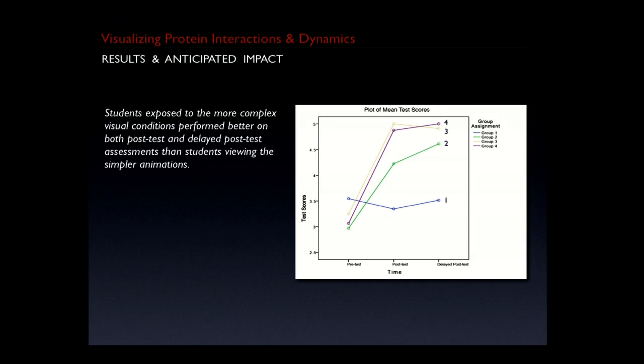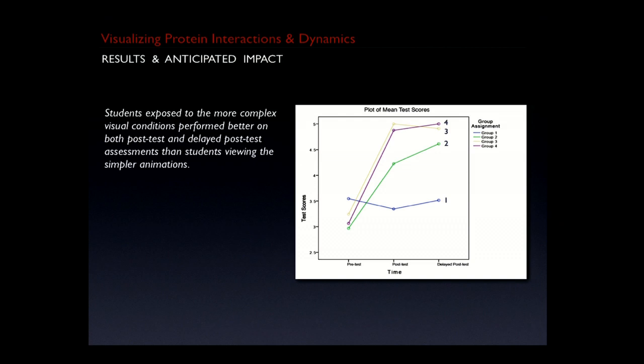What we find is that students who see the complicated versions presumably do better, at least on our test. We're encouraged by this data because it doesn't exactly match some existing things in the literature. Our approach is to have an integrated educational design protocol with people generating the visualization, so we have fine control over the visuals we're generating and how we're testing them.